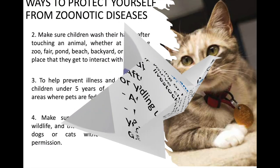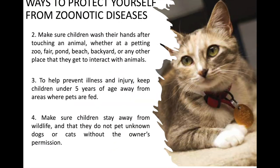We should make sure children wash their hands after touching an animal, whether at the petting zoo, fair, pond, beach, backyard, or any other place where they interact with animals, because they are also at high risk. To help prevent illness and injury, keep children under five years of age away from areas where pets are fed, make sure children stay away from wildlife, and ensure they do not pet unknown dogs or cats without the owner's permission.